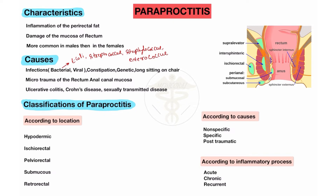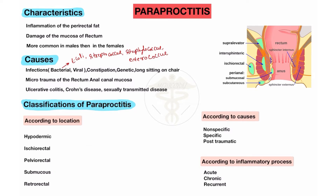Classification of Paraproctitis: there are many classifications based on different causes, location, and inflammatory process. According to localization — which is the main classification and mostly asked in examinations — Paraproctitis may be hypodermic type, ischiorectal, pelviorectal, submucosal, and retrorectal.